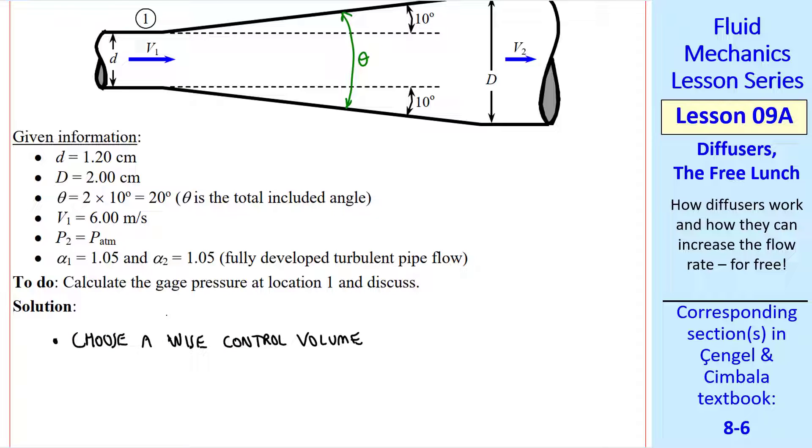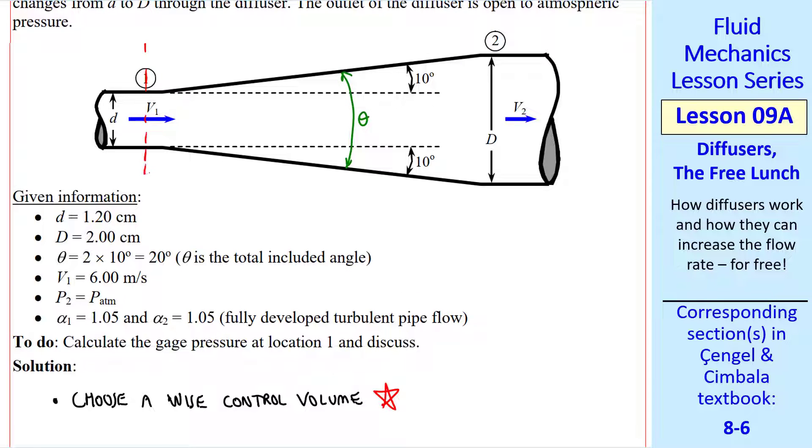As I've said many times, the first step is to choose a wise control volume. It's pretty obvious that I want to cut through one, cut through two, and include the entire diffuser in my control volume.